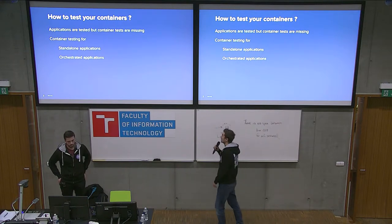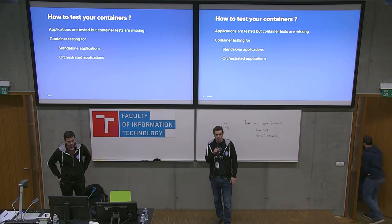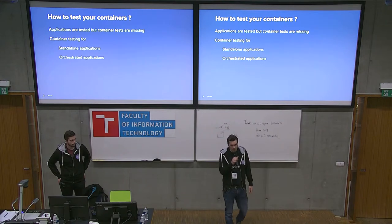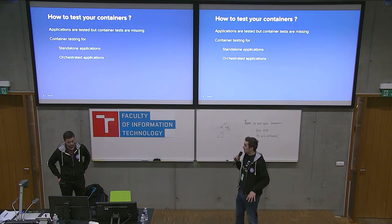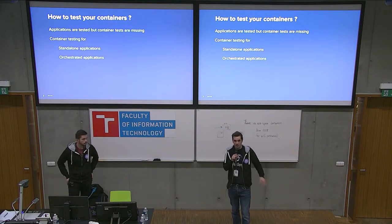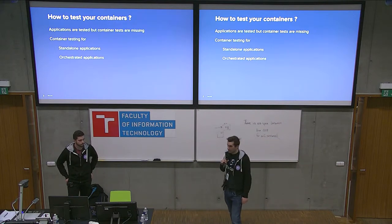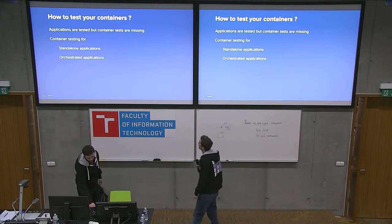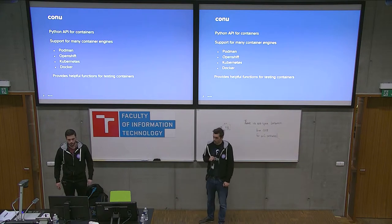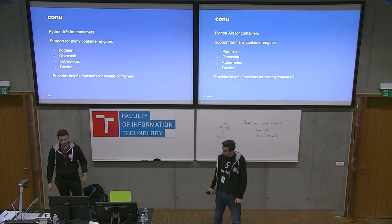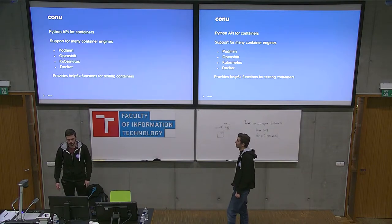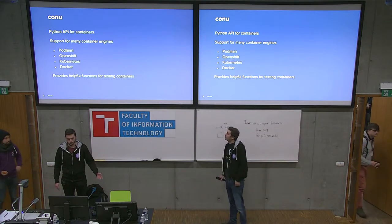There are really two main use cases: testing standalone applications — making it easy to spin up a container and run some tests against it — but also being able to test orchestrated applications, where you bring up a cluster of containers and test interaction between your services. KONU is a simple Python API for containers, and the word 'containers' is important because it supports many container engines for both standalone and orchestrated containers.